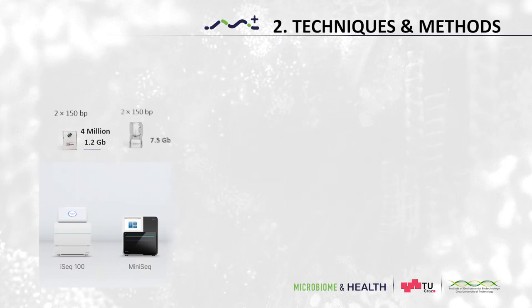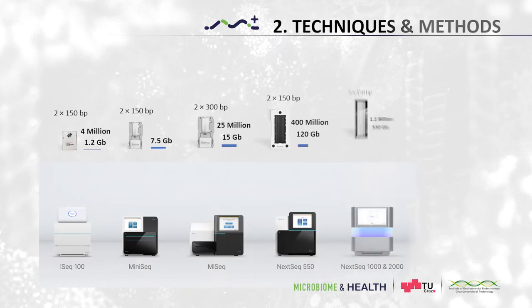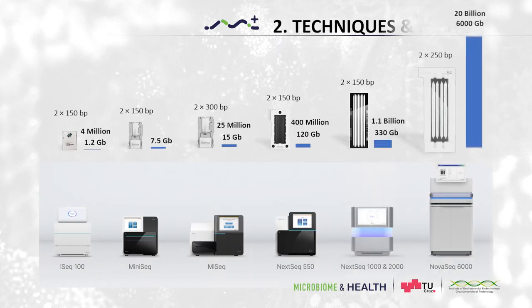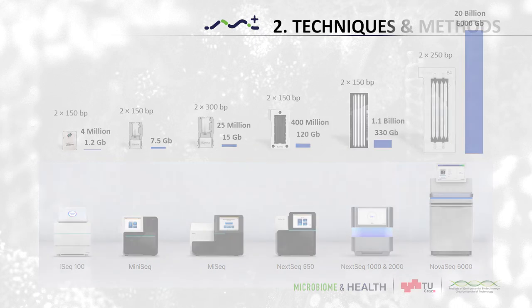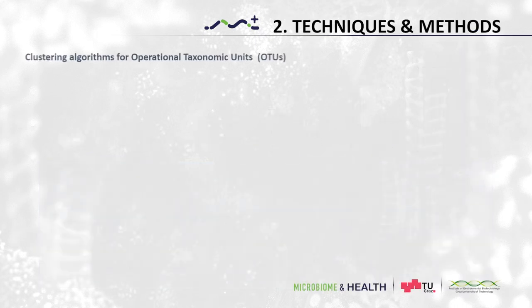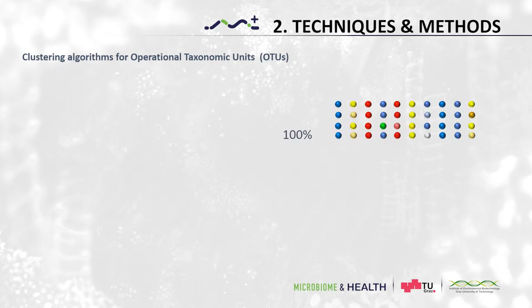As high throughput sequencing platforms generate millions to billions of reads, analyzing each one will be very computer intensive. To avoid that, we can collapse or cluster identical sequences while also recording their abundance.